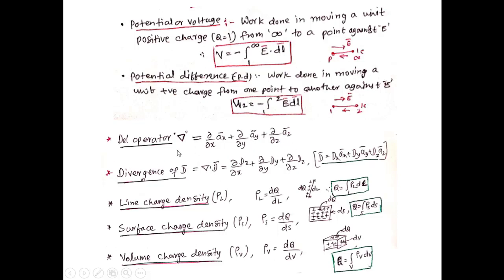By using the DEL operator we can define divergence of D bar. Del · D bar is called the divergence. In Cartesian coordinate system it is given by ∂Dx/∂x + ∂Dy/∂y + ∂Dz/∂z, where D bar = Dx a-hat + Dy a-hat + Dz a-hat.